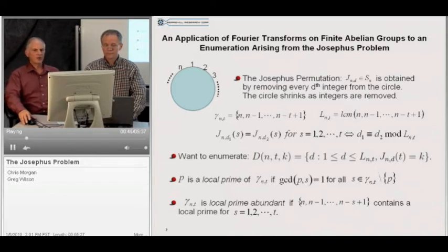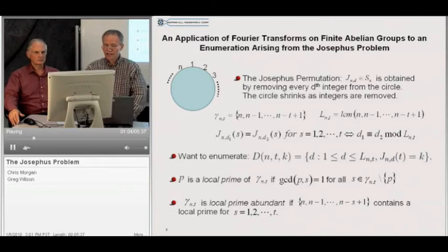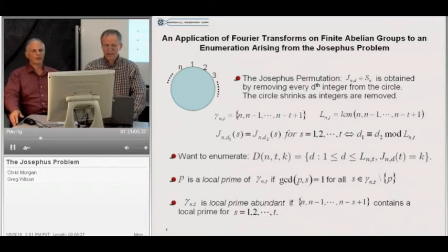We want to enumerate the counting parameter d subject to conditions that we'll describe shortly. So we consider the consecutive positive integers starting at n and going down to n minus t plus 1, and we denote that set by gamma n t. We take the LCM of the elements of that same set and call the result L n t. A simple observation is that J n d1 equals J n d2 all the way up to and including t if and only if d1 is congruent to d2 mod L n t.